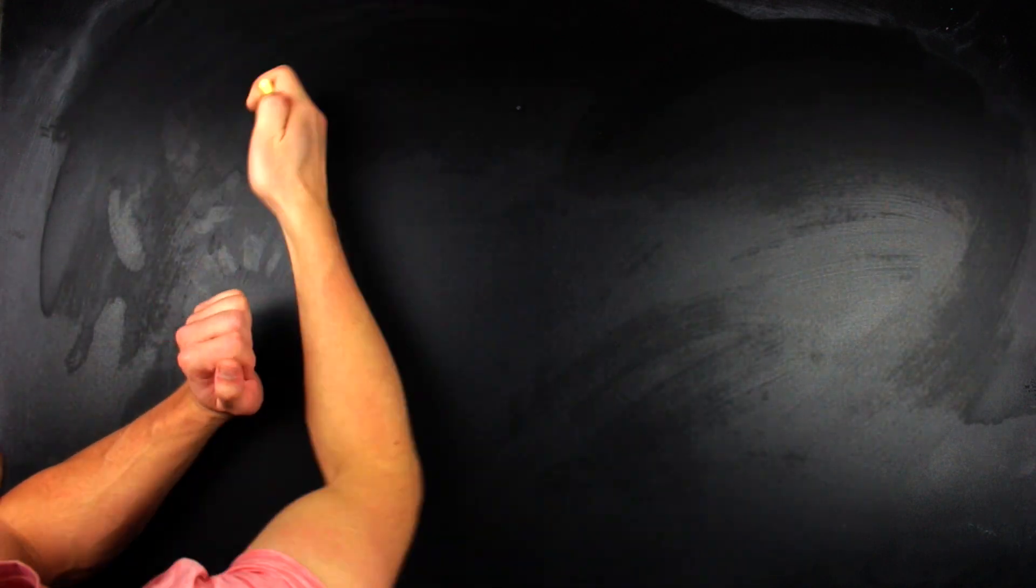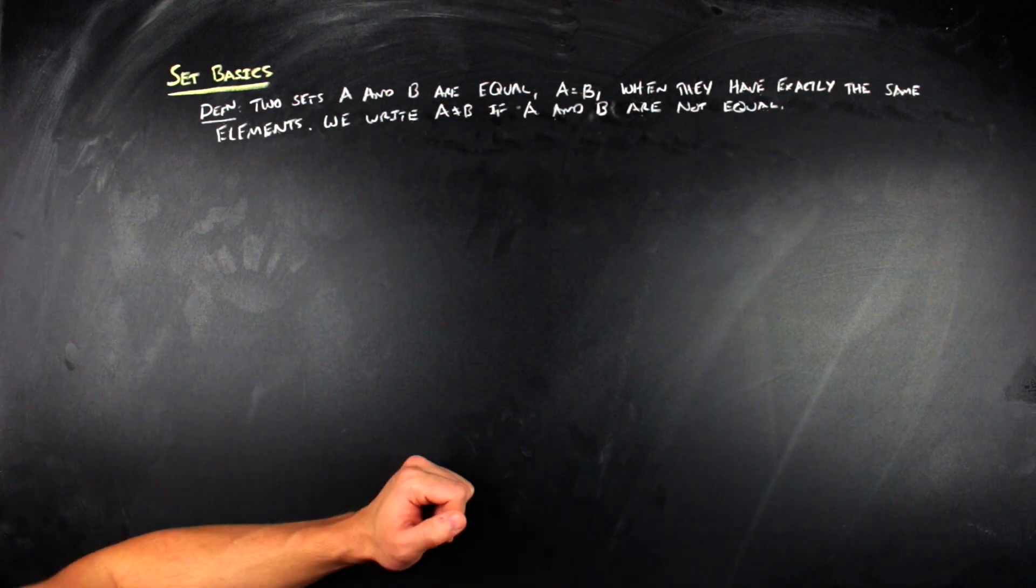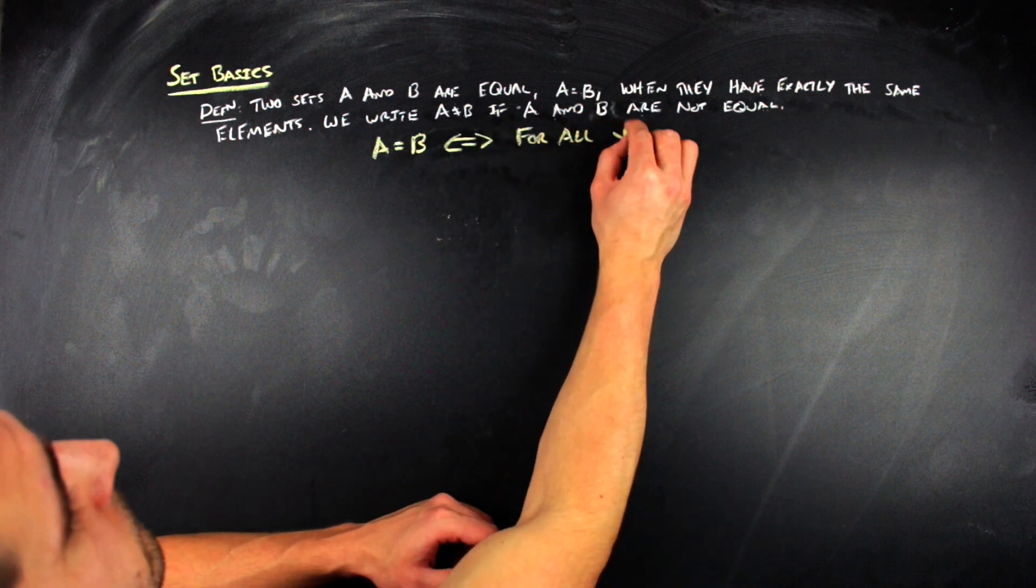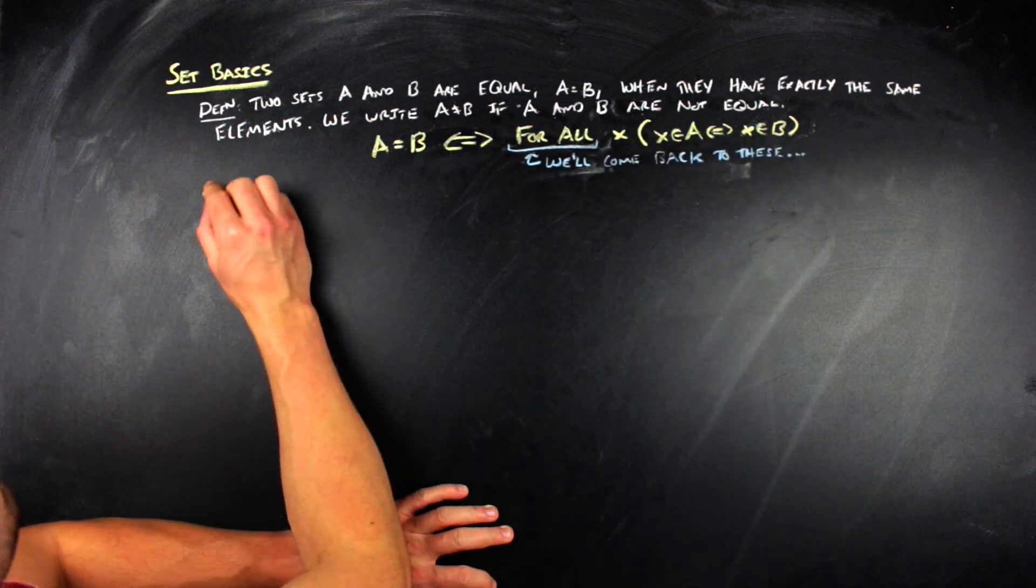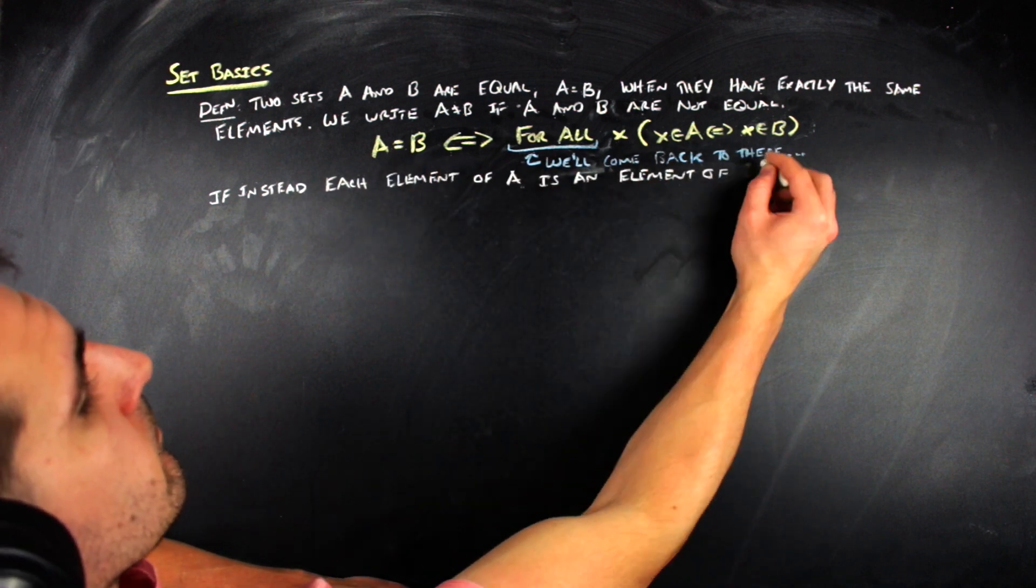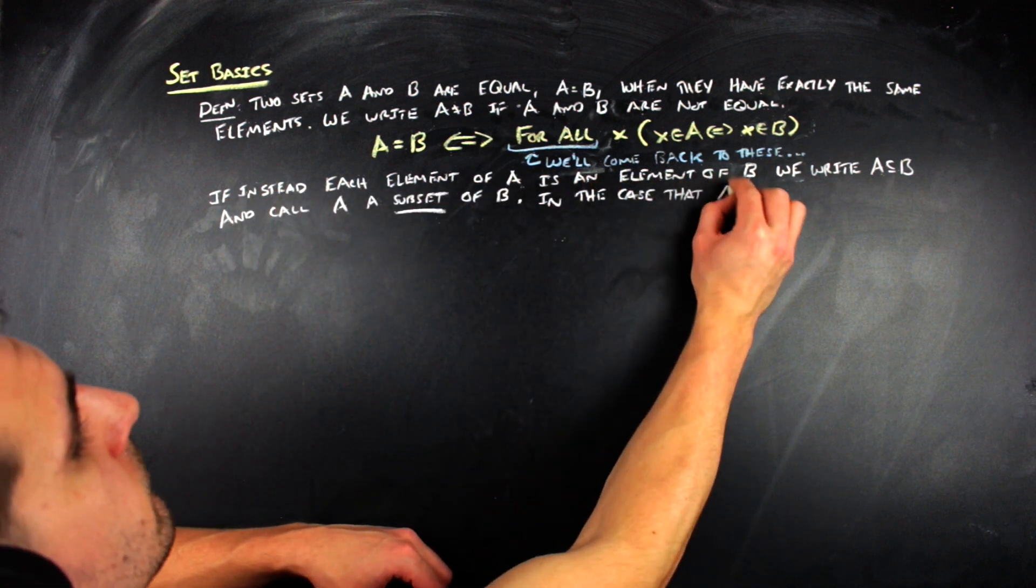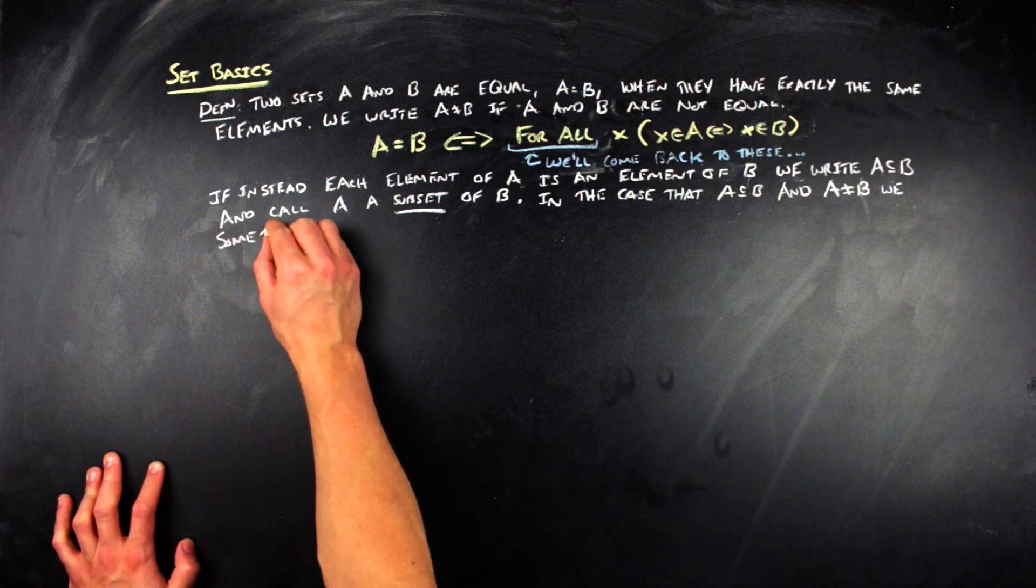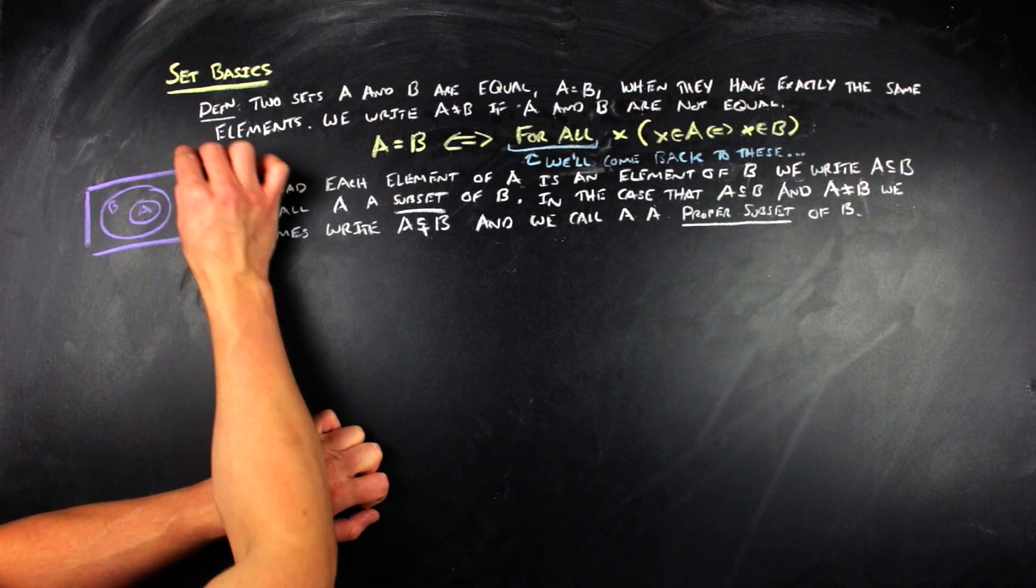So, same as with when we did propositions in the last video, now that we have an idea of what sets are, I should tell you how to do things with sets. And so, here are some set basics. So, two sets, A and B, are equal. A is equal to B when they have the same elements. We write A is not equal to B if, in fact, A and B are not equal. This can be written symbolically in the following way. So, A is equal to B if and only if, for all x, x is within A if and only if x is within B. If instead, each element of A is an element of B, we write A is contained in B, or A is a subset of B, and A is called a subset in this case. Further, if A is a subset of B and A does not equal B, we may write that A is strictly a subset of B. And we call A a proper subset of B.